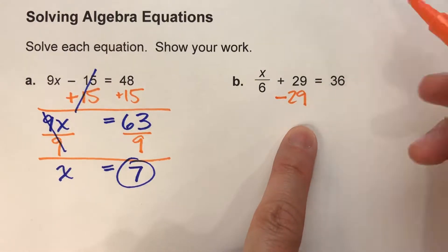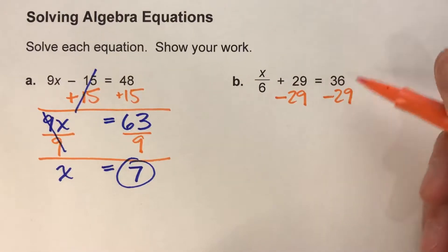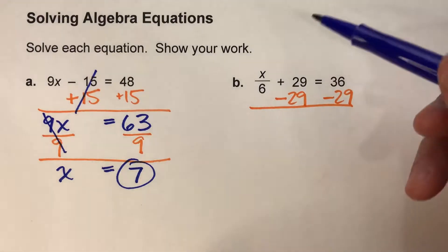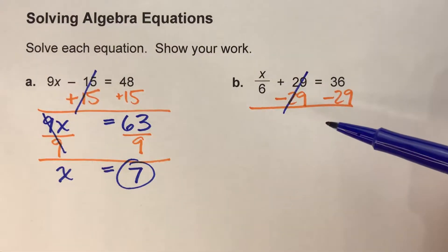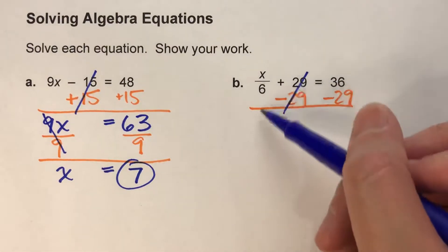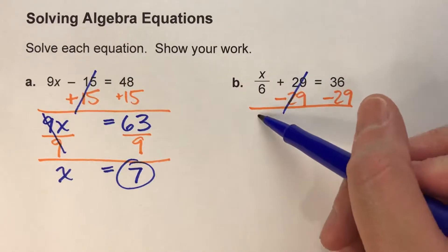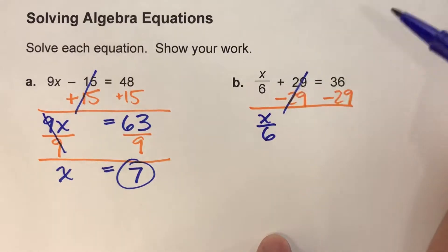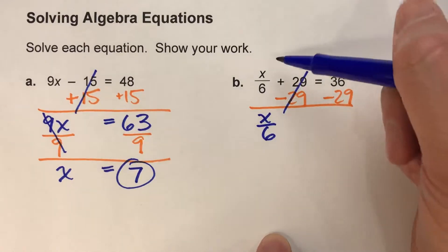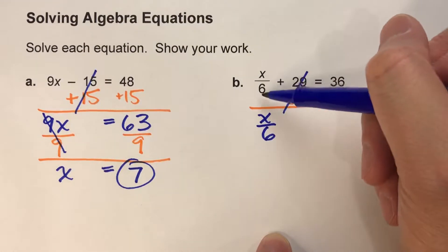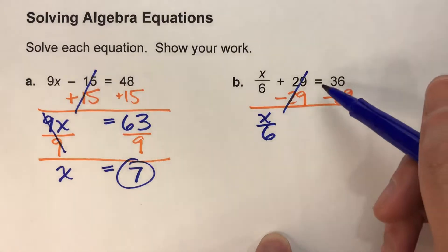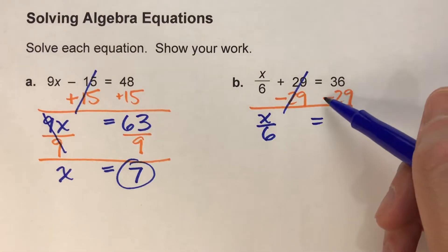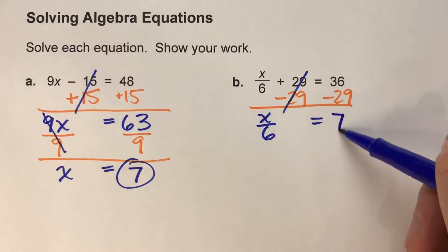What we do to one side of the equal sign, we have to do to the other side. Adding and subtracting 29 undo each other, and all that's left is x divided by 6. By the way, don't get confused — this literally means x divided by 6, that's all it means. The equal sign drops down, and 36 take away 29 is 7.